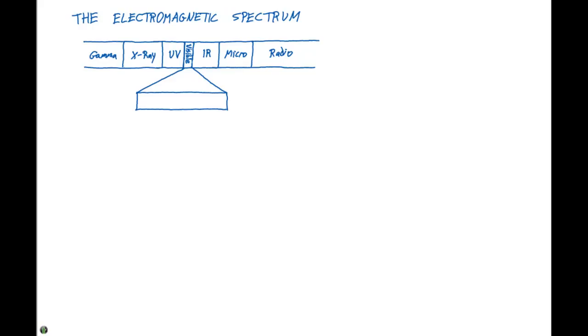So we can put the wave-like properties of electromagnetic radiation into something called the electromagnetic spectrum. And what that's going to do is order all the different types of radiation in terms of energy.